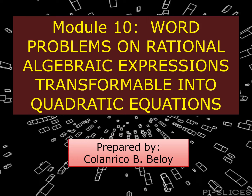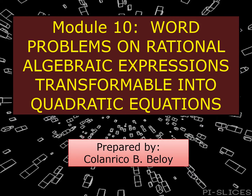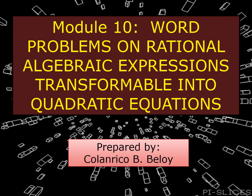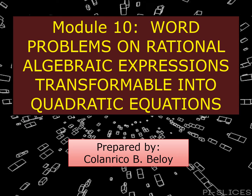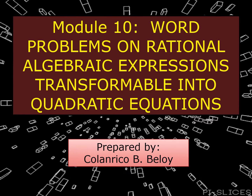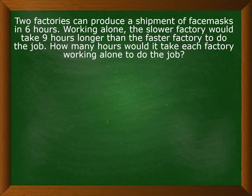Hello, students! Today we will discuss board problems on rational algebraic expressions which are transformable into quadratic equations. This is a difficult part in problem solving wherein you encounter rational algebraic expressions. Let's start with the first problem: Two factories can produce a shipment of face masks in six hours. Working alone, the slower factory would take nine hours longer than the faster factory. How many hours would it take each factory working alone to do the job?